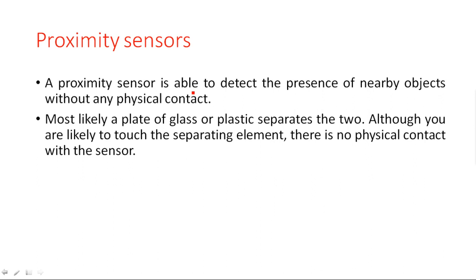Most likely a plate or glass of plastic separates the sensor from the user. Although you may touch the separating element, there is no physical contact with the sensor itself. The sensor is covered with a glass material, and even if a human touches that glass, their hand is not touching the proximity sensor. So whenever we touch the glass, the proximity sensor detects it and shows some glow or triggers whatever action it is connected to.